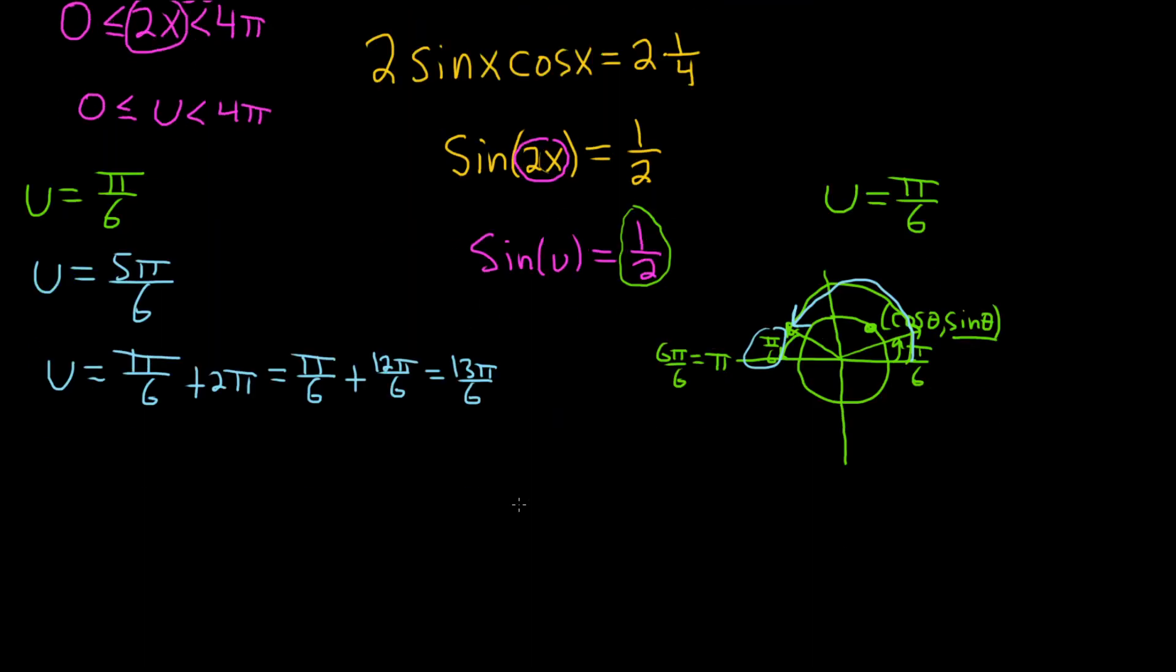Now do the same thing with 5π over 6. Take 5π over 6. And then just add 2π to that. So plus 2π. So that's 5π over 6. Plus 12π over 6. Really beautiful stuff. And that's 17π over 6.